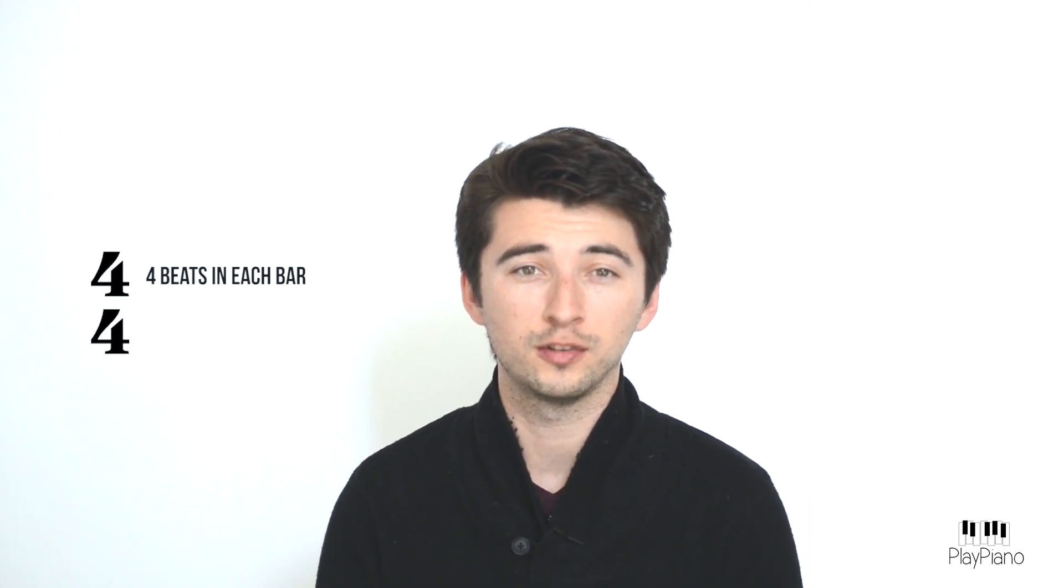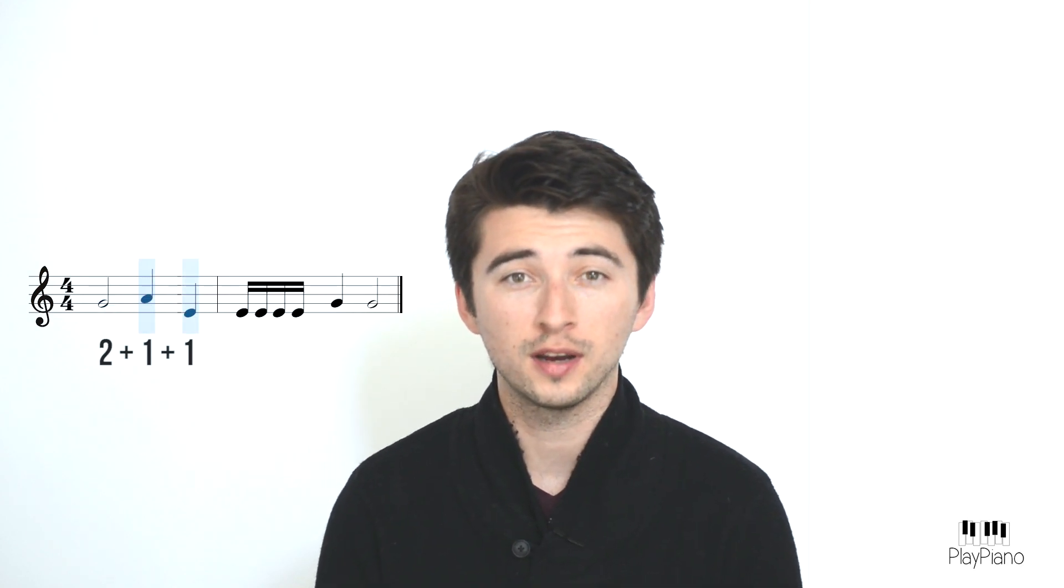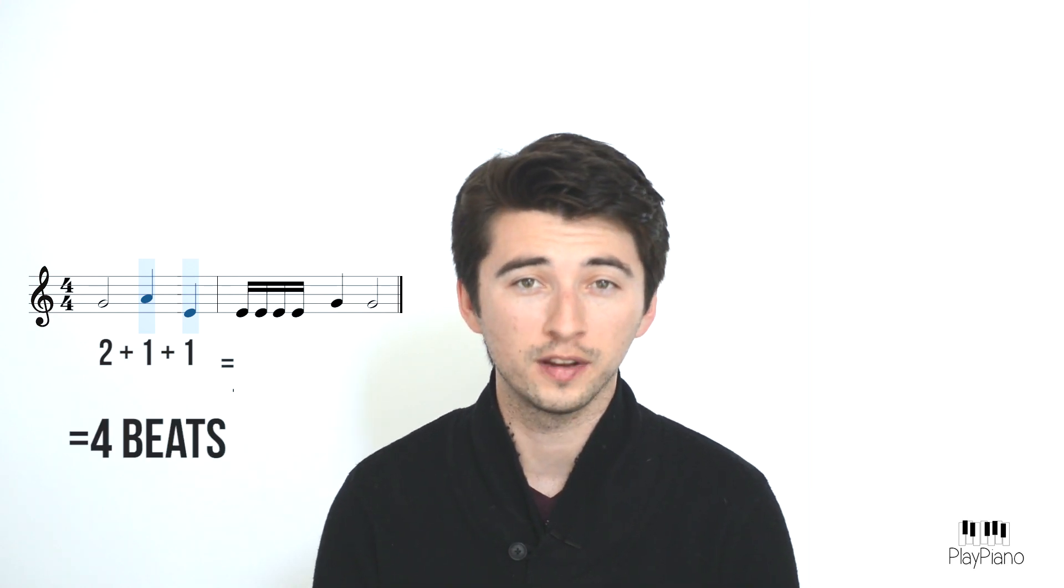So, in the case of the 4-4 time signature, the top number of four implies that there are four beats in each bar of the song. As you can see, the music starts with a half note, which equals two beats, then two quarter notes, which combined equal another two beats, and everything in the bar equals four beats.